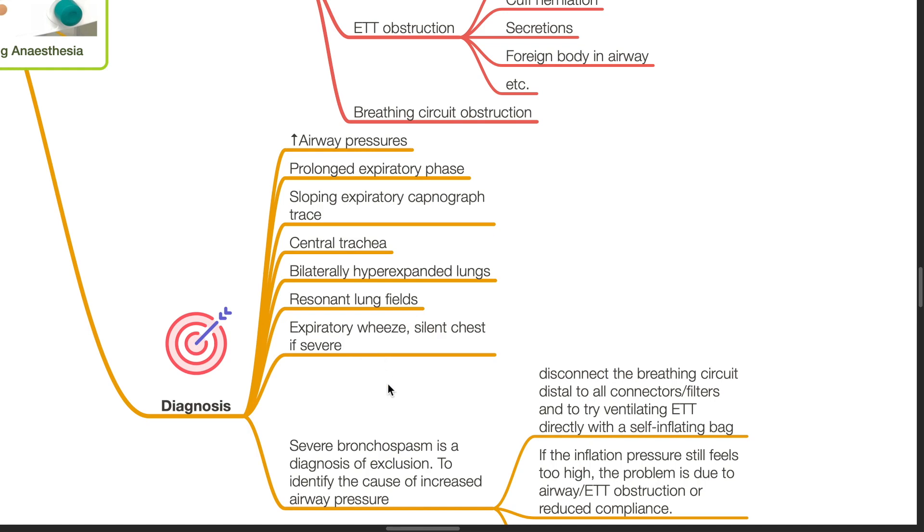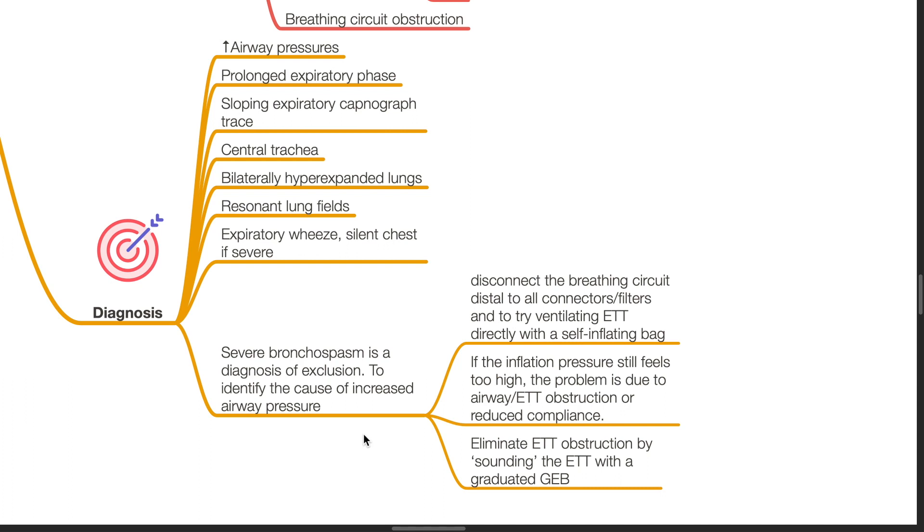These indicate severe bronchospasm during anesthesia. Severe bronchospasm is a diagnosis of exclusion. To identify the cause of increased airway pressure, disconnect the breathing circuit distal to all connectors or filters and try to ventilate the endotracheal tube directly with a self-inflating bag. If the inflation pressure still feels too high, the problem is due to the airway or endotracheal tube obstruction or reduced compliance. Eliminate ETT obstruction by sounding the ETT with a graduated gum elastic bougie.